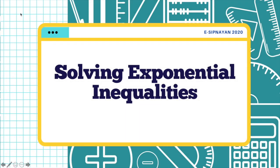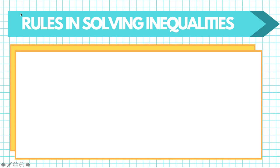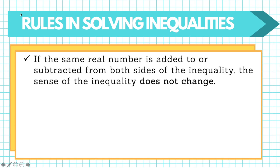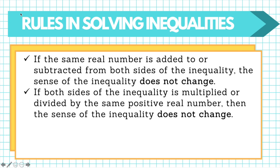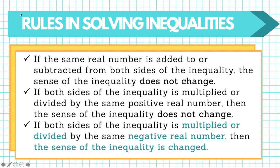We will now solve exponential inequalities. To do so, remember these rules: First, if the same real number is added to or subtracted from both sides of an inequality, the sense of the inequality does not change. Second, if both sides are multiplied or divided by the same positive real number, the sense does not change. Third, if both sides are multiplied or divided by the same negative real number, then the sense of the inequality is reversed — greater than becomes less than, or vice versa.